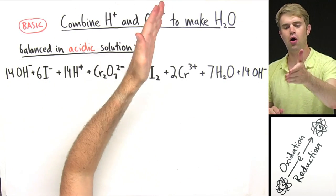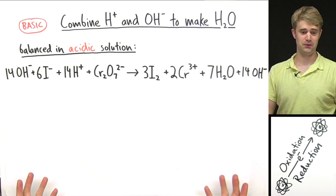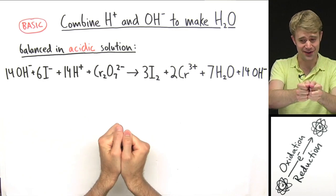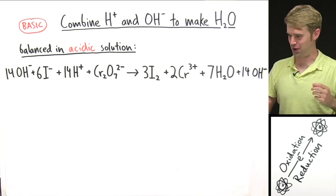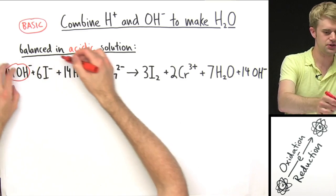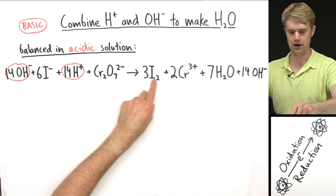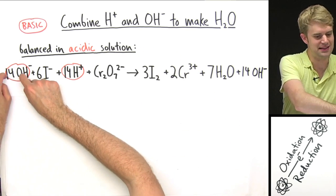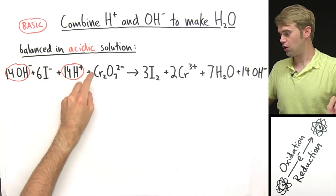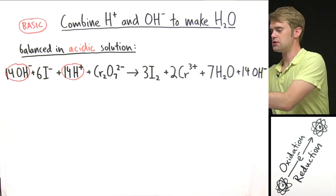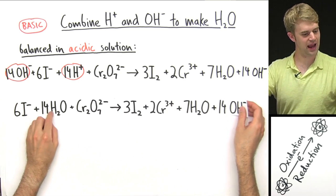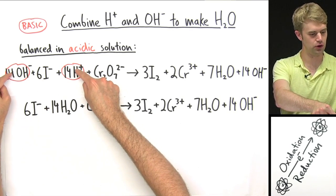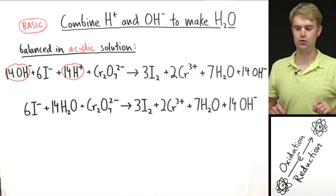Next step: combine H⁺ and OH⁻ to make H₂O. This is how we get rid of the H⁺ — H⁺ and OH⁻ come together to make water. I have 14 OH⁻ here and 14 H⁺ here. I'm going to take these and put them together to make water: 14 OH⁻ and 14 H⁺ give me 14 H₂O. Everything else stays the same — the only change is pulling these two together to make H₂O.